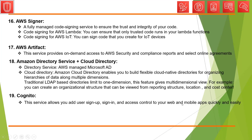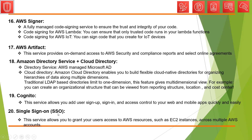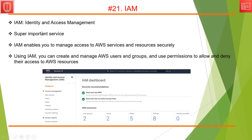Cognito — when you think of Cognito, think of web and mobile apps. This service helps web and mobile apps to quickly set up sign-up, sign-in, and access controls. Single Sign-On, as the name says, allows you to grant your users access to AWS resources such as EC2 instances across multiple AWS accounts.